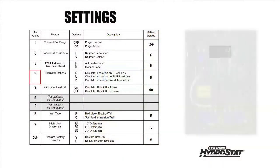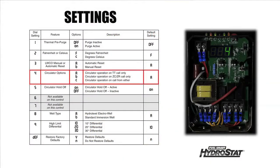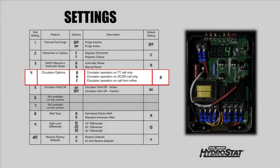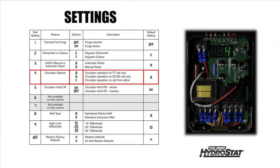Option four allows you to set which inputs will activate the circulator contacts. The options include A, any call to TT, B, a call to ZCZR, or C, a call to either TT or ZCZR. The default is set to TT. This feature provides wiring flexibility when adding zones to existing installations.